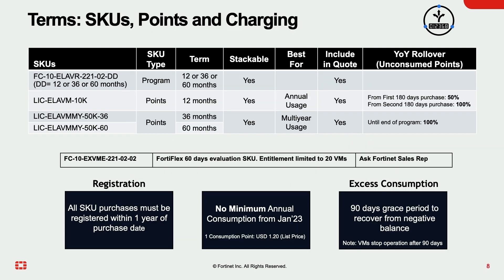For the FortiFlex enterprise use case, a prepaid SKU can be purchased with 12, 36, or 60 months term along with a point pack SKU. Point pack SKUs are purchased in advance, and points are deducted on a daily basis based on resource consumption.